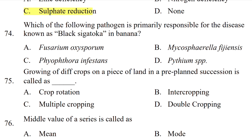Which pathogen is primarily responsible for the disease known as Black Sigatoka in banana? The options are Fusarium oxysporum, Mycosphaerella fijiensis, Phytophthora infestans, or Phytarium species. The correct option is Mycosphaerella fijiensis.